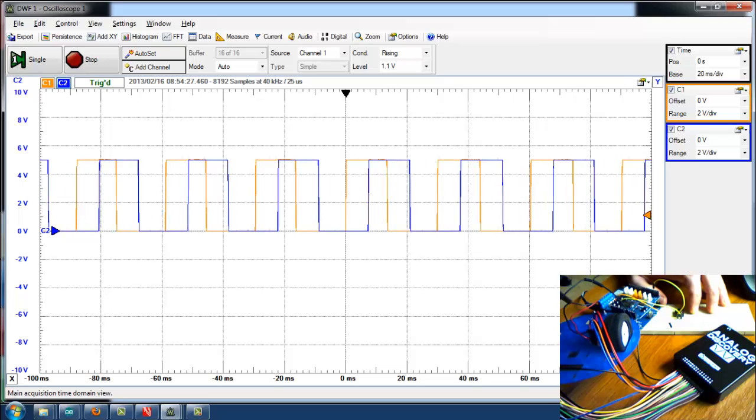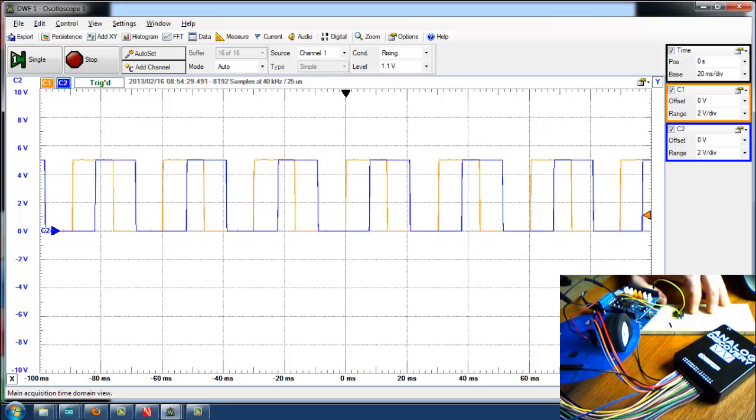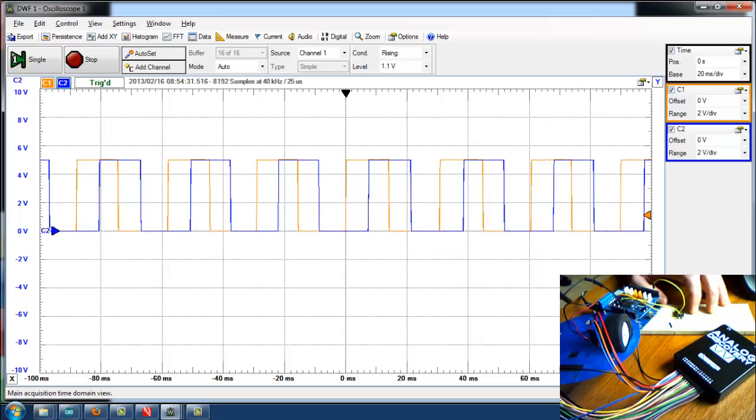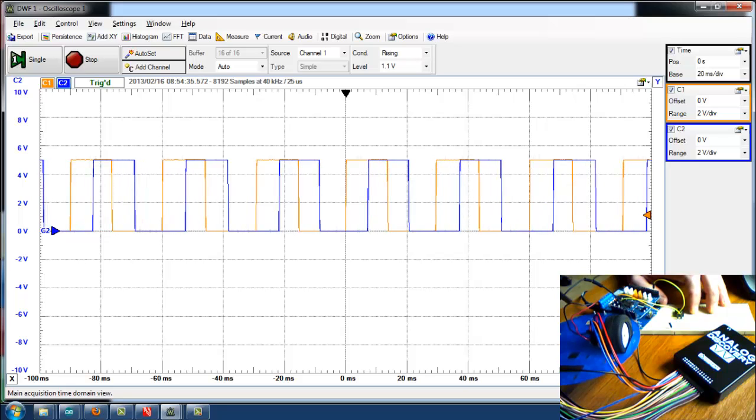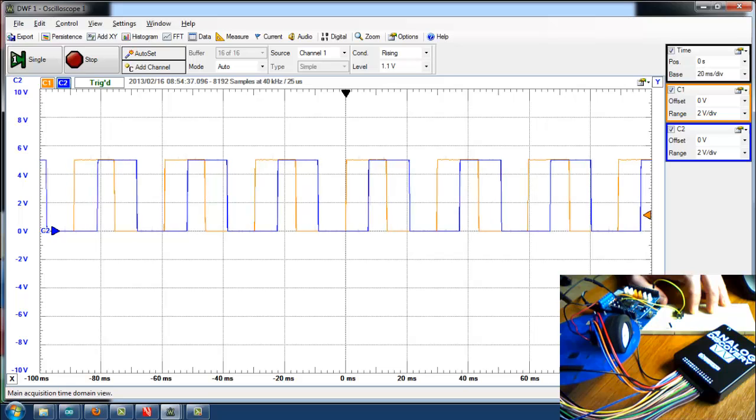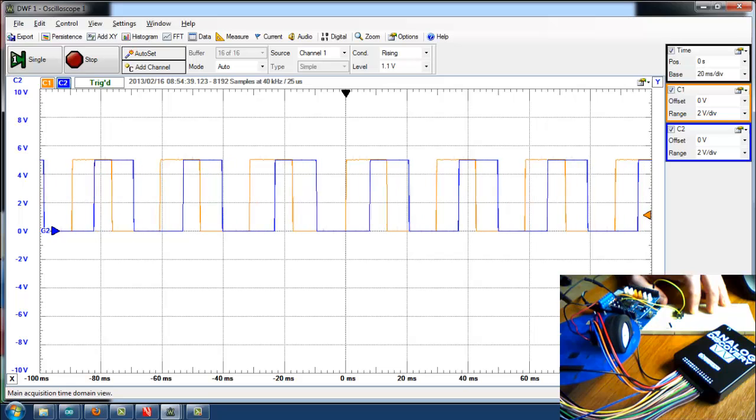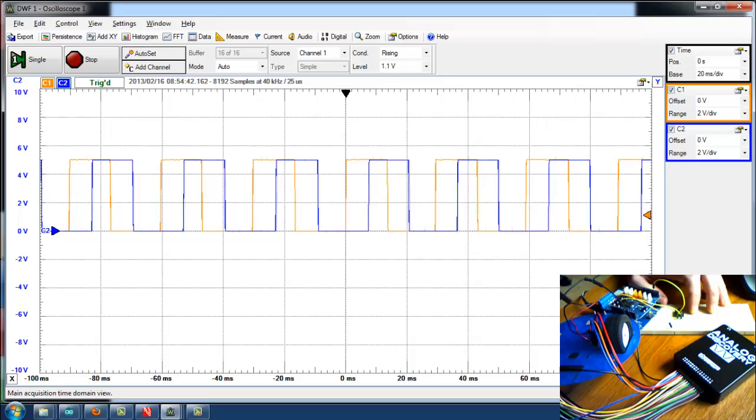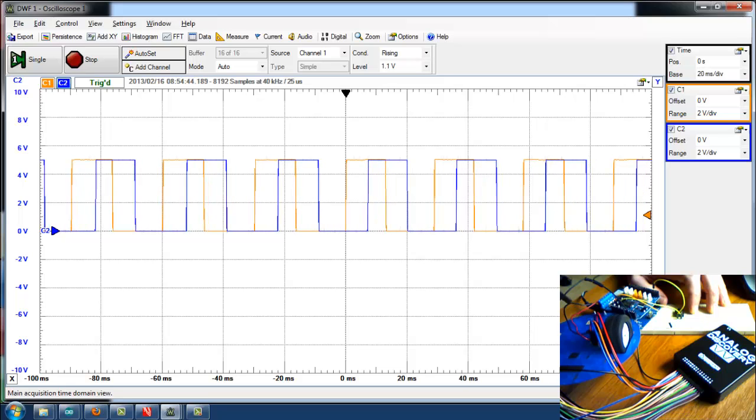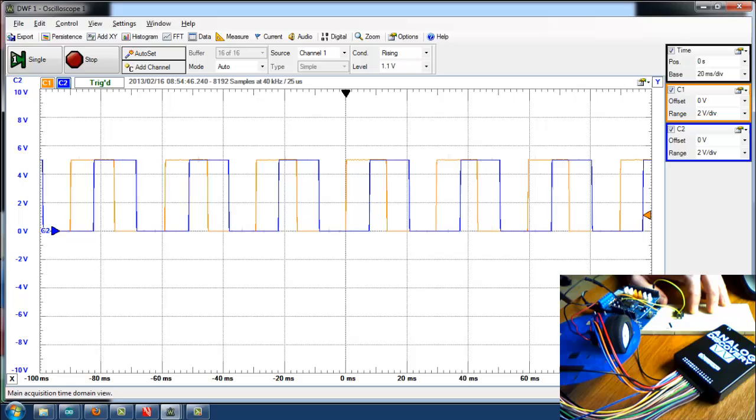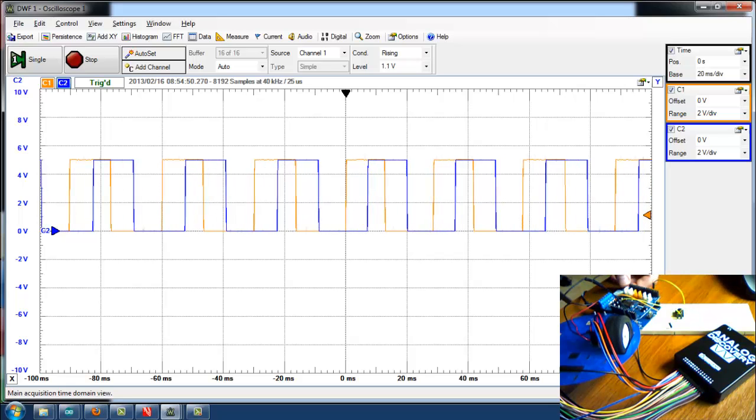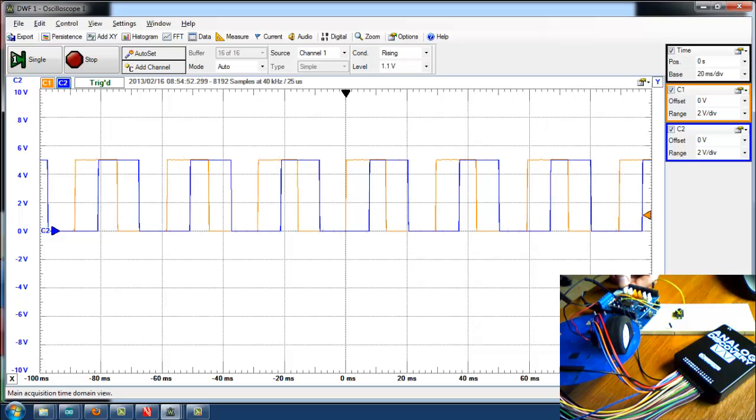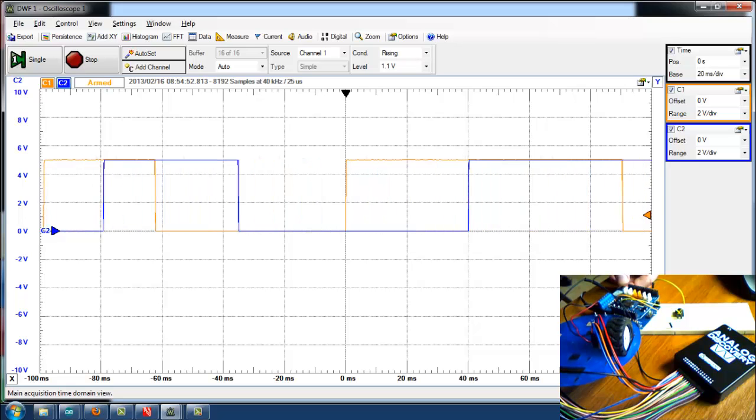By counting the rate at which the encoder channels go back and forth between 0 and 5 volts, we can see how fast it's moving. And by determining which one goes up first and down first, we can tell which direction it's moving. We can figure out essentially the complete state of our wheel, both direction and speed, at any given time.